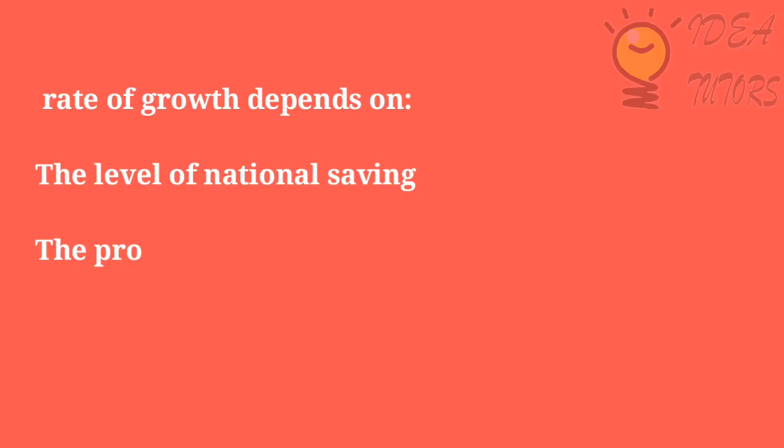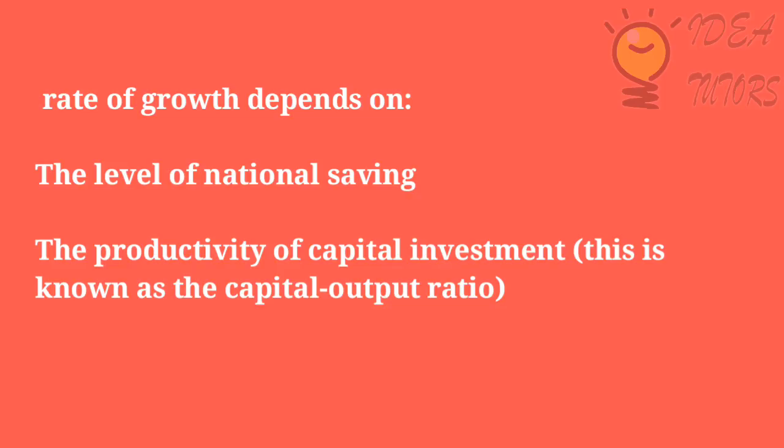In this lesson we will learn about the Harrod-Domar growth model. The model suggests that the economy's rate of growth depends on the level of national saving and the productivity of capital investment. This is known as the capital output ratio.